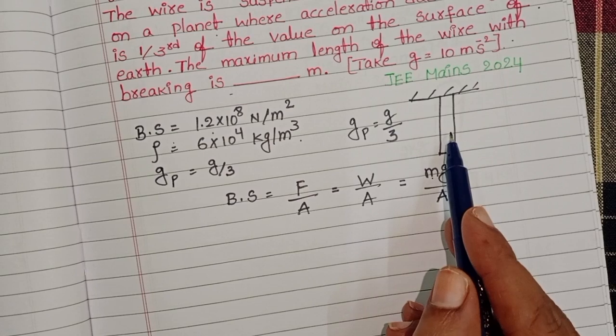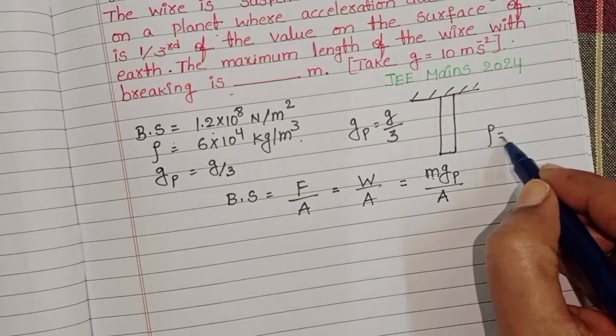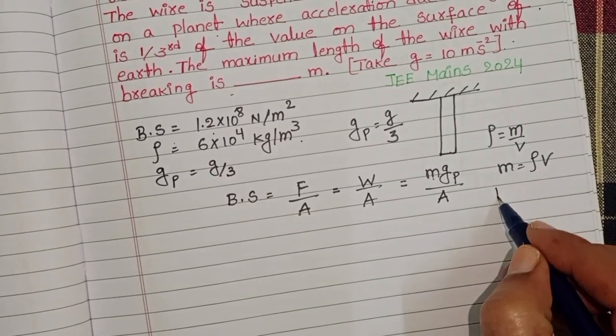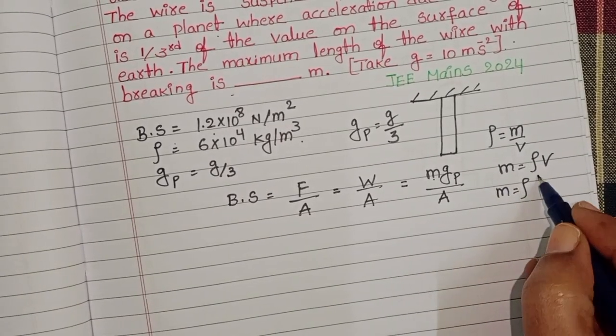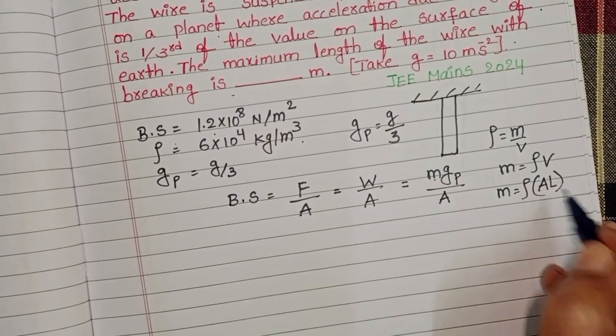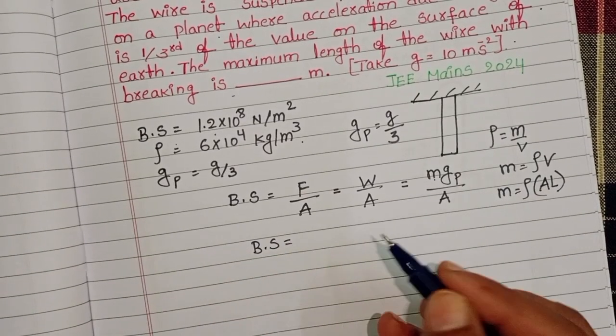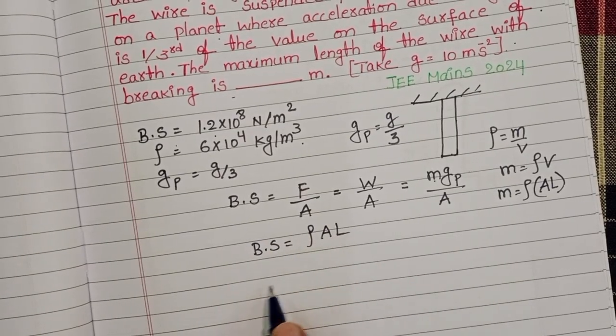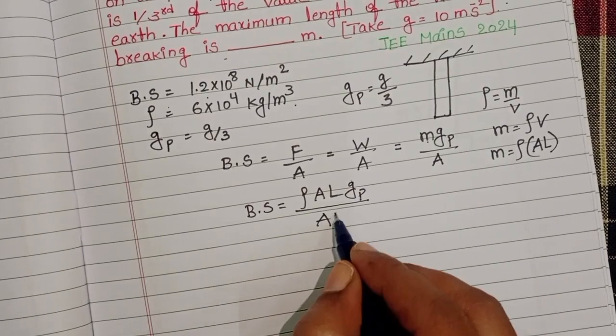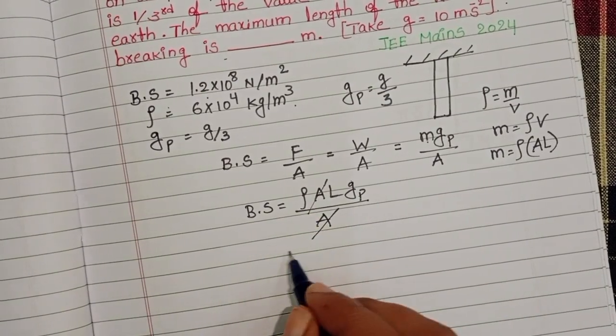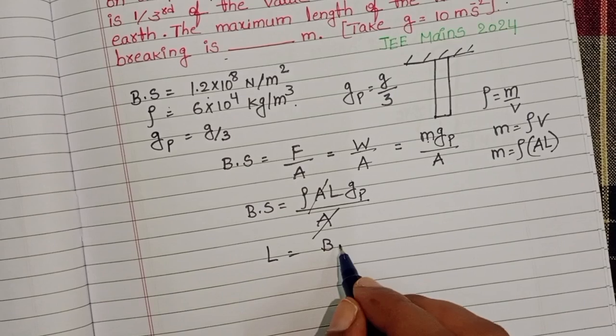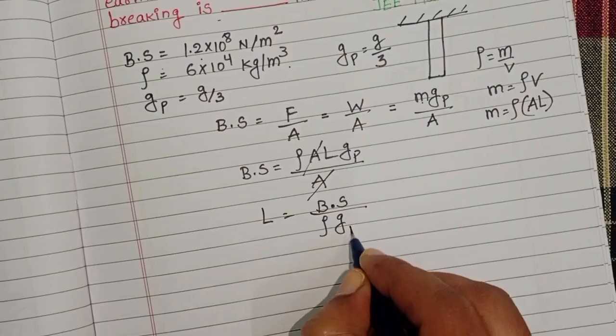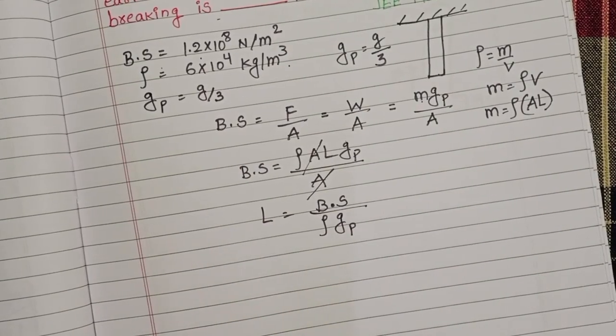We don't know the mass of this wire. Density equals mass by volume, then mass equals density into volume. Volume of the wire equals area of cross section into length. So breaking stress equals density into area of cross section into length of the wire. Area of cross section A gets cancelled. L equals breaking stress by density into acceleration due to gravity. Now substitute the values.